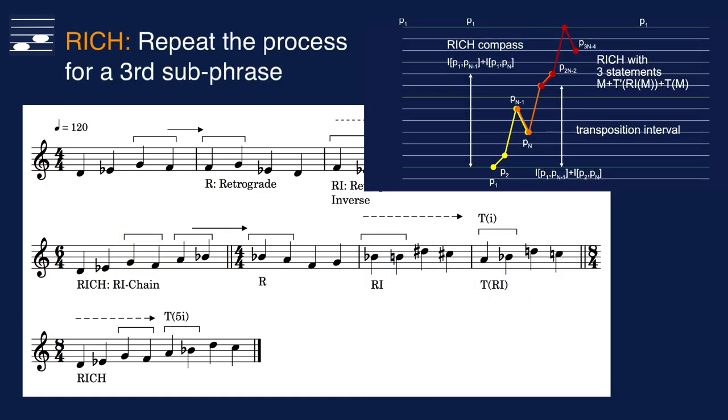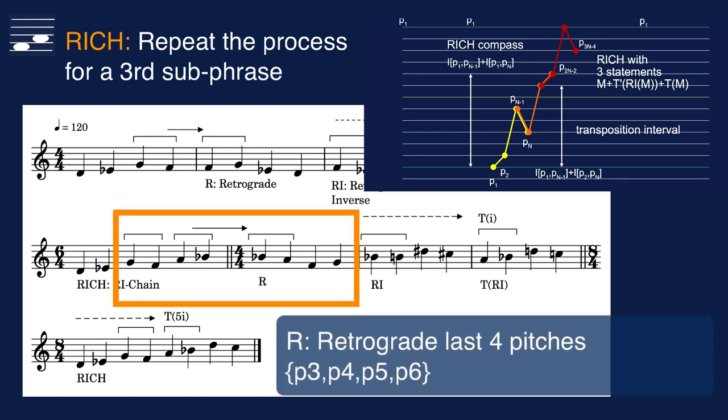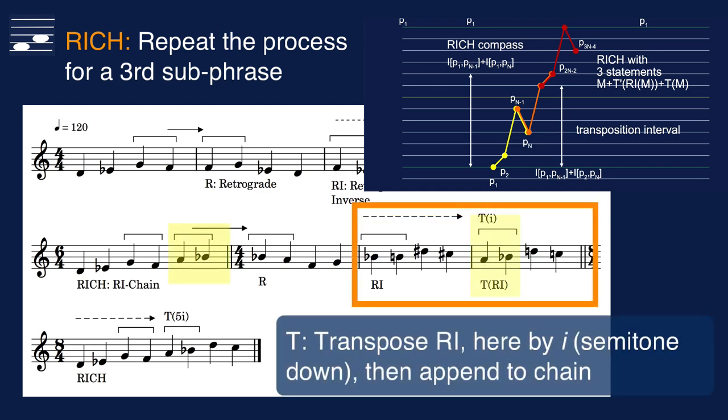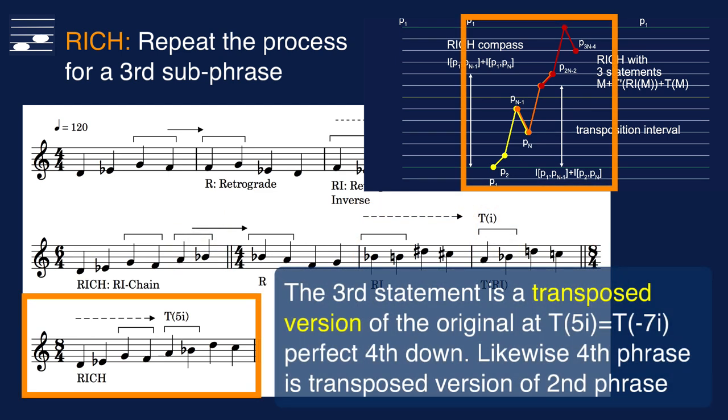We may repeat the process and stick more statements of this motif to the end of the chain, as illustrated here, where the process now is applied to pitches P3 to P6. So we write the retrograde, its inversion and then the appropriate transposition. The final result, an 8-note long melody with 3 sub-phrases shown here. Note that the third statement is a transposed version of the original, here at the perfect fifth above the starting pitch.